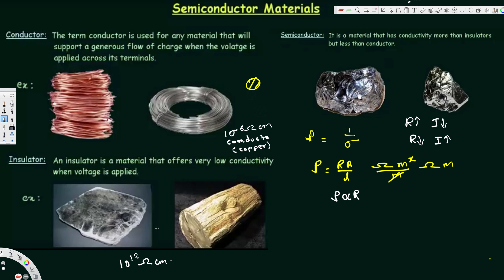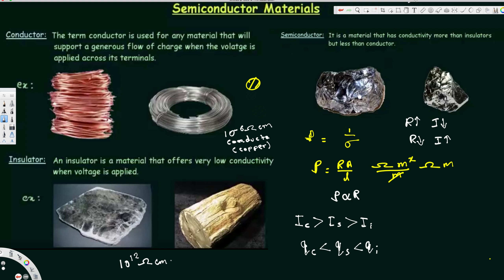For the insulator, taking mica as an example, the resistivity is 10 to the power of 12 ohm-centimeter — really, really high — so current flow is almost zero. For the semiconductor, resistivity is in between. Comparing current flow: conductor has very high current flow, then semiconductor, then insulator. And for resistivity it's the opposite: ρ_conductor < ρ_semiconductor < ρ_insulator.